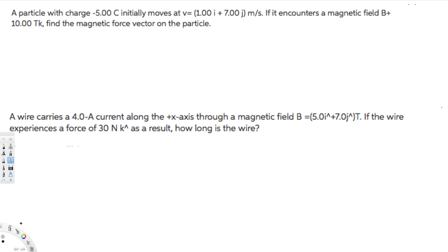What's going on guys, let's do this problem right here. This question is asking: a particle with charge negative 5 coulombs initially moves at a velocity vector, and if it encounters a magnetic field B equal to 10 tesla, find the magnetic force vector on the particle. Let's see how we can find the magnetic force.